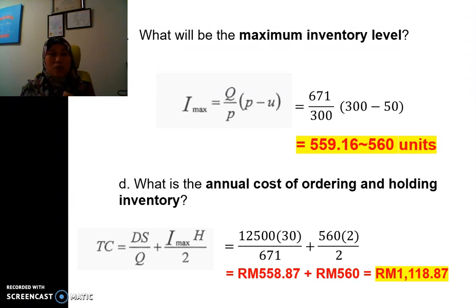And then we need to find the IMAX first before we can find the total cost. So that's how P, O, Q model is used for this question, right? So I hope you understand. Thank you.